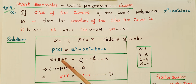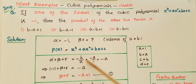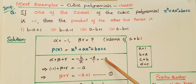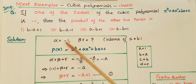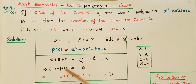So α + β + γ = −a/1 = −a. Since alpha is minus 1, we get: −1 + β + γ = −a, therefore β + γ = −a + 1. This is our first equation.